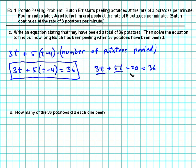Okay. Well, 3t and 5t are like terms. We know about adding like terms. That's 8t. And we want to get rid of the 20, so we add 20 to both sides.